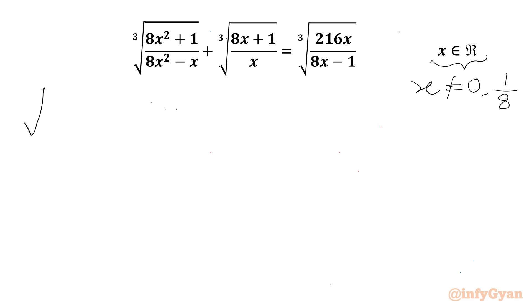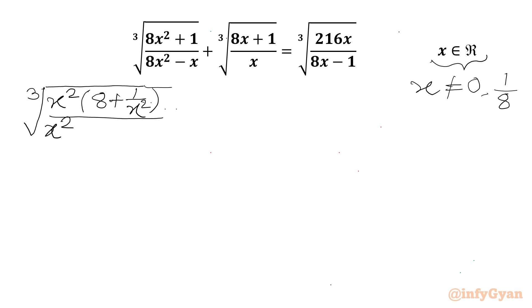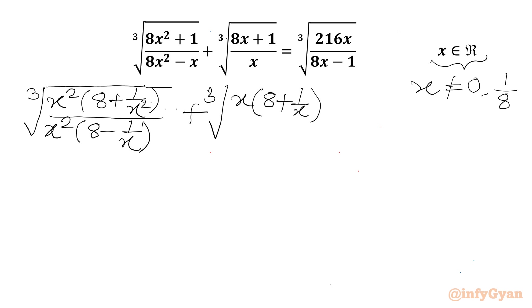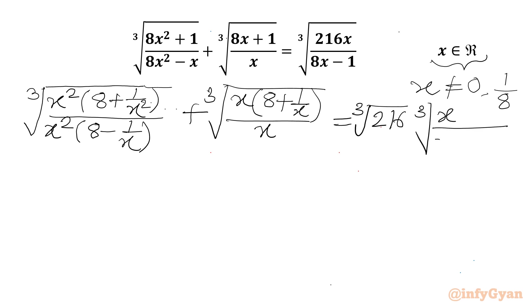Now we can write the equation as the cube root of — let's take x² common from the numerator. So in the bracket we will get 8 plus 1 over x². Over x² common, in the bracket we will get 8 minus 1 over x. Similarly, I will take x common from the numerator, so 8 plus 1 over x, over x.